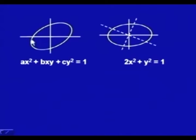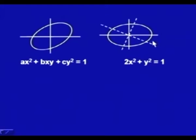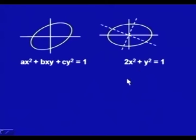Similarly, ax² + bxy + cy² = 1 for suitable values of a, b, and c represents an ellipse. After rotation of the axes, the equation transforms to 2x² + y² = 1, which is in standard form with no cross terms present.